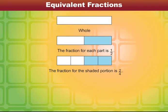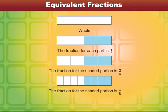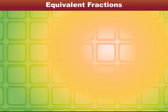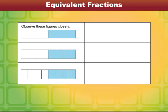What is the fraction for the shaded portion? It is two by four. Let's divide this into eight equal parts. What is the fraction for the shaded portion? It is four by eight. If you observe these three figures closely, you will see that the fractions one by two, two by four, and four by eight are all equal.